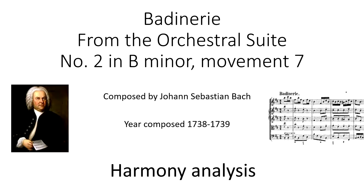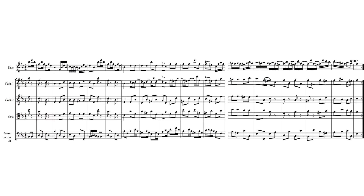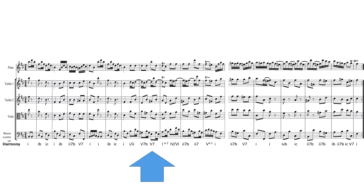Hello everyone and welcome to today's video where we're going to be looking at the harmony. When we're looking at the harmony, what we're actually looking at is the chords — that is the musical word for chords, which is harmony. In today's video we're going to be looking at the type of chords Bach is using, and by the end we will understand what these symbols are telling us and look for patterns in what Bach is doing with these chords.